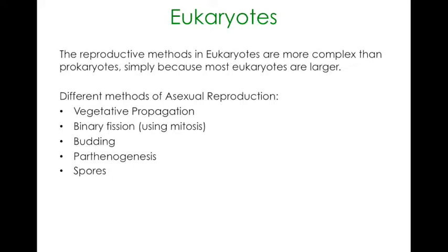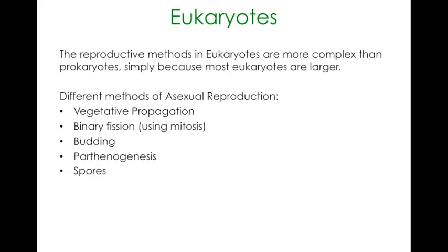Keep in mind, many eukaryotes — and when we talk about eukaryotes, we're talking about most of the other things that we see: the animals, the plants, fungi, but also protists and other things as well. All of these things can employ asexual reproduction, and sometimes sexual reproduction too, because there's more than one way to reproduce. Let's get into it.